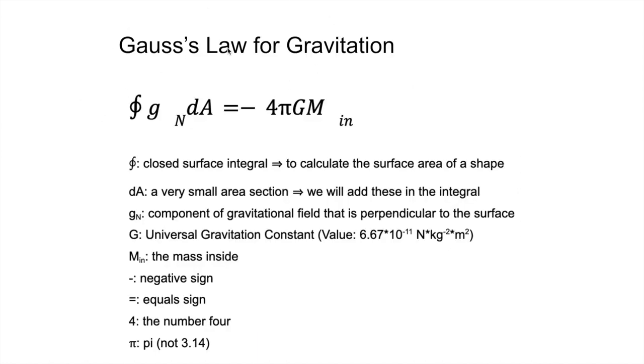So here is Gauss's law for gravitation. And we will go step by step about what this is. So we have a weird looking integral. It is a closed surface integral. It is used to calculate the surface area of a shape. Then we have dA, which you can see here. It is a very small area section. It is an infinitesimal area. And by using the surface integral, we will be adding all of these under the integral sign.